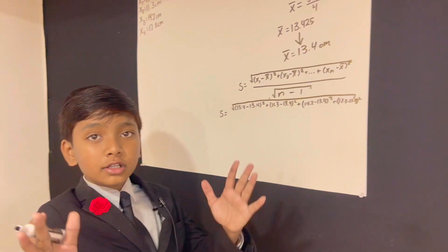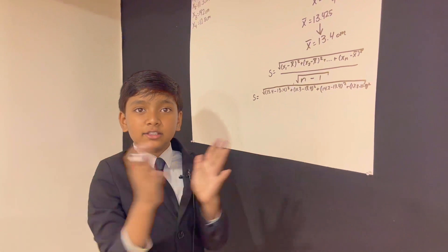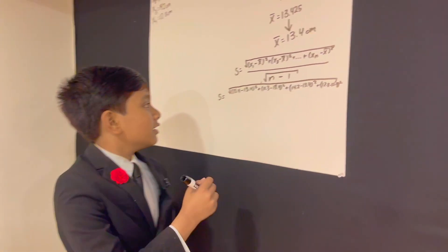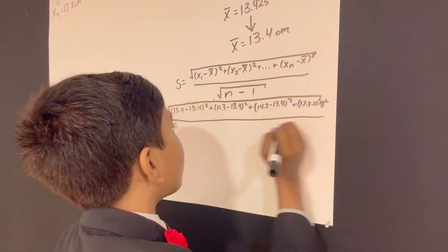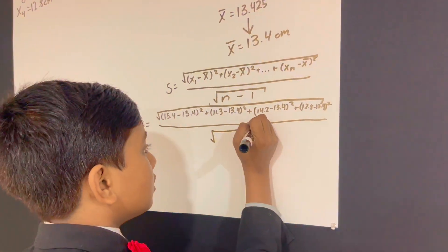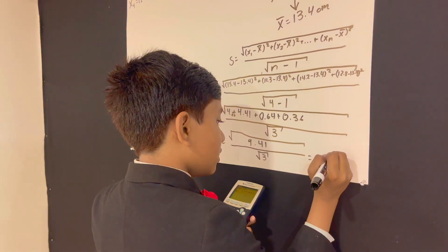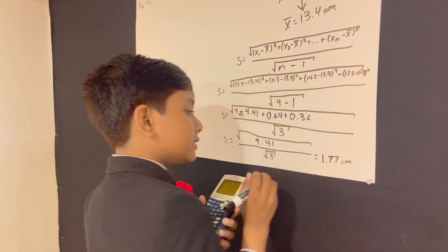Now, even though the 13.4 has been significantly squished, that still does not change the amount of significant figures in it. So now we divide this by the numbers. We only have room for three here buddy. So we have 1.77 centimeters.